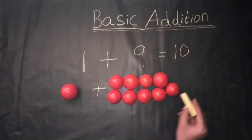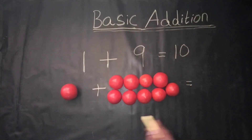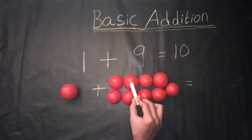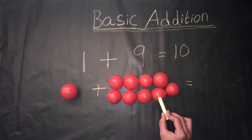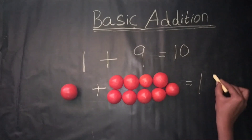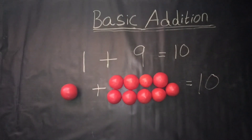Counting by objects, 1 plus 9 is equal to: 1, 2, 3, 4, 5, 6, 7, 8, 9, 10. We get the answer: 10.